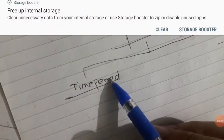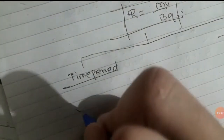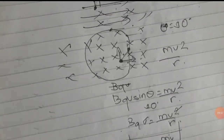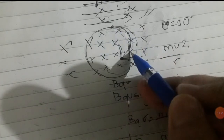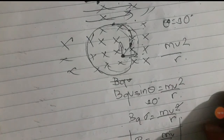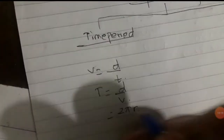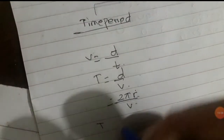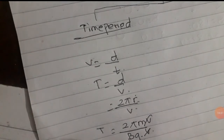What is the time period? Using kinematics, time equals distance divided by velocity. When the particle completes one full circle, the distance is the circumference 2πr. So time period T = 2πr/v. Substituting r = mv/bq, the v cancels and we get T = 2πm/bq. Notably, the time period is independent of velocity.